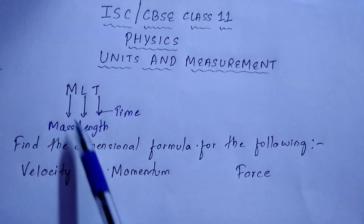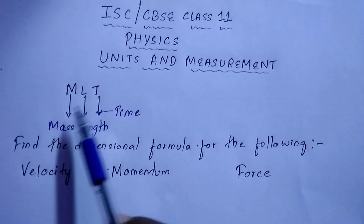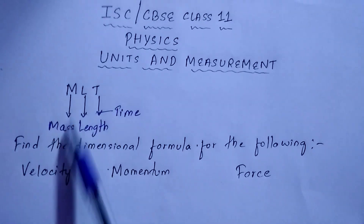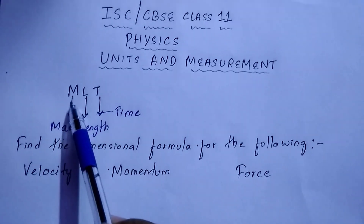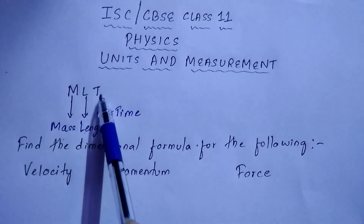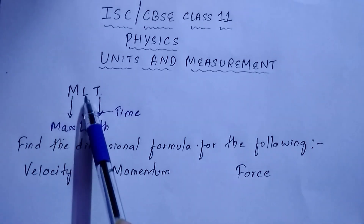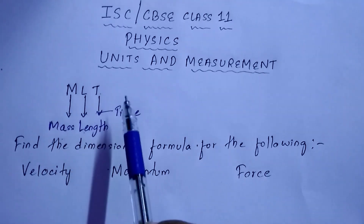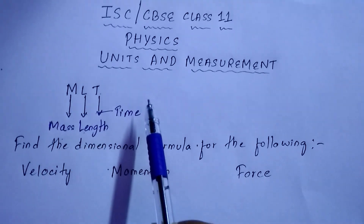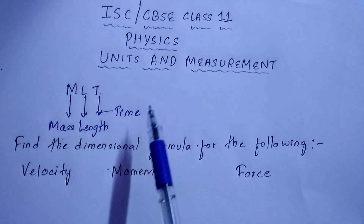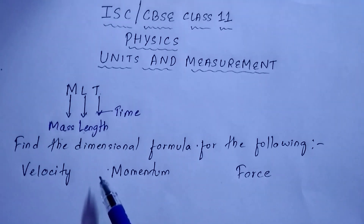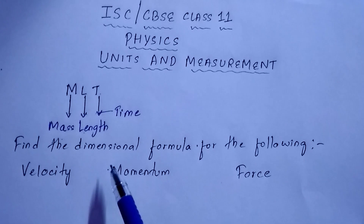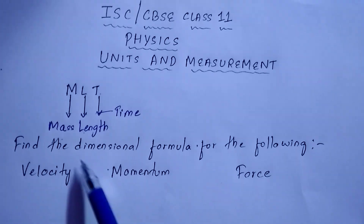To find the dimensional formula, you need to express it in terms of MLT, where M is mass, L is length, and T is time. For current, the dimensional formula uses ampere, symbol A. I'll be giving you examples so that you will learn better how to find the dimensional formula.